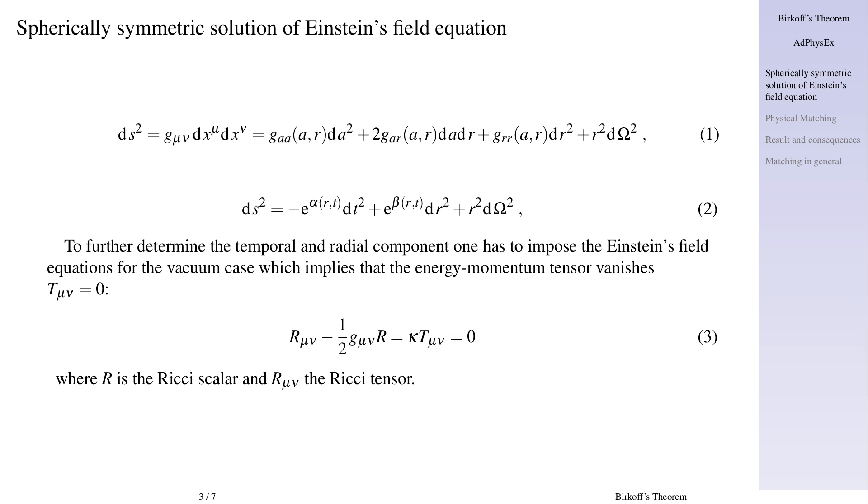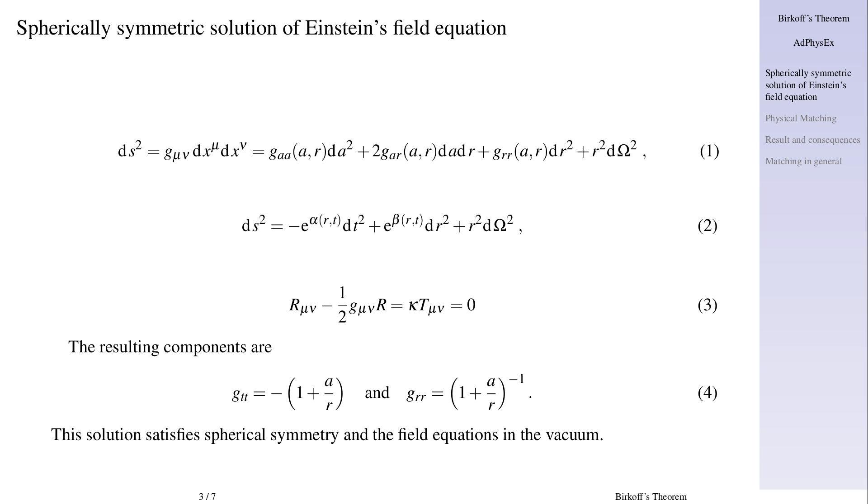Where R is the Ricci scalar and R mu nu the Ricci tensor. The resulting components are g t t equals minus one minus a over r and g r r equals one over one plus a over r. This solution satisfies spherical symmetry and the field equations in the vacuum.